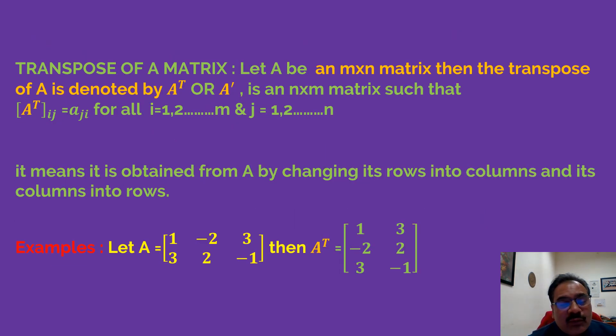Now what is the definition of transpose of a matrix? Let A be an m×n matrix. Then the transpose of A is denoted by A^T or A', is an n×m matrix such that [A^T]_ij = a_ji for all i = 1,2,...,m and j = 1,2,...,n.